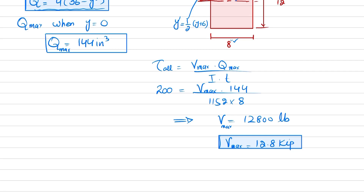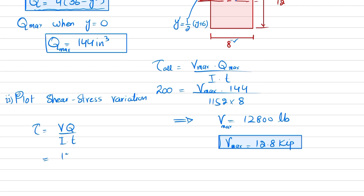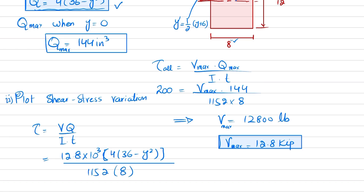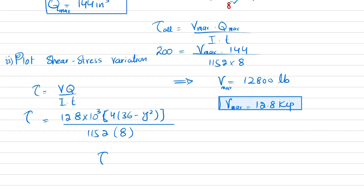For part two, we plot the shear stress variation over the cross section. Using τ = VQ / (It) with V = 12,800 lb, Q = 4(36 − y²), I = 1152 in⁴, and t = 8 inches, the shear stress equation simplifies to τ = 5.56(36 − y²) psi.